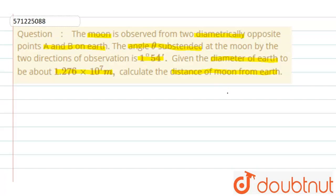So friends, this is Earth and this is the moon. In the question, there are two points A and B which are diametrically opposite. This distance is D. We are observing the moon from point A and another time from point B. The angle subtended here is angle theta, which is given to be 1 degree 54 minutes.